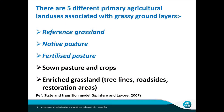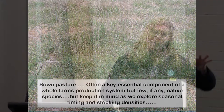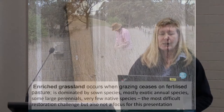I'm going to talk more about the first three — the reference, native pasture, and fertilised pasture — not so much about sown pastures and enriched grasslands. Sown pasture is often a really key component of your whole farm production system, integrating Phalaris and these sort of sown pastures. But it has few if any native species — keep it in mind though when we look at seasonal timing and stocking density, because they're a really important part of the whole system.